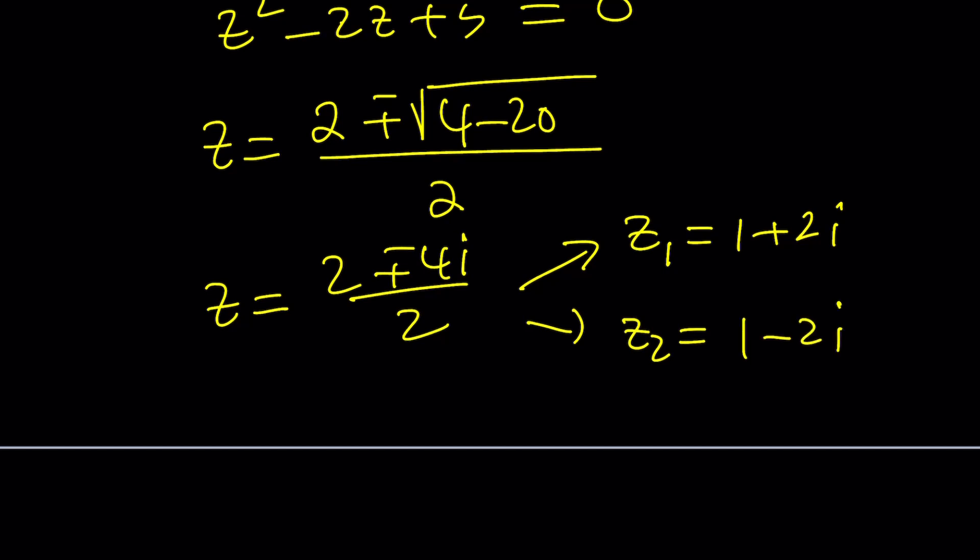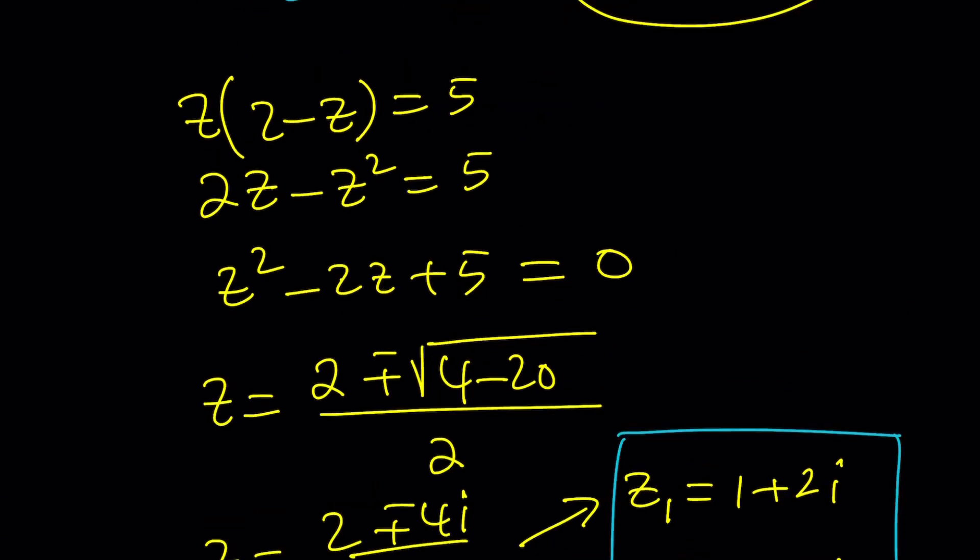So there are conjugates. Which one is Z, which one is Z bar? Doesn't matter, whatever you like. We're solving for Z by the way, not Z bar, because once you find the Z values, Z bar is easy to find. So those are the solutions we were solving for Z, right?